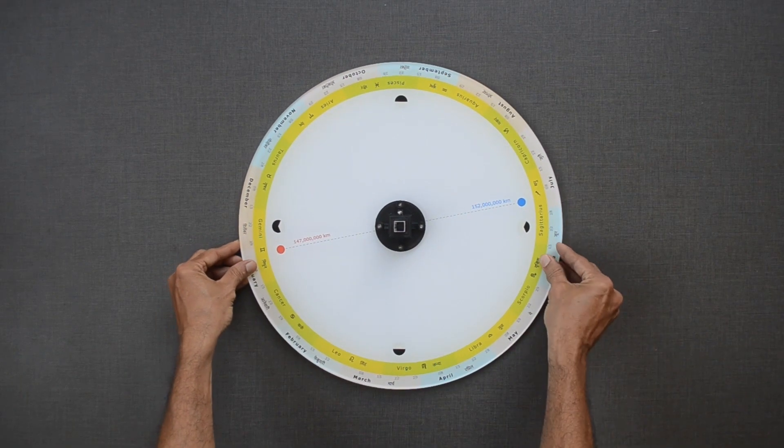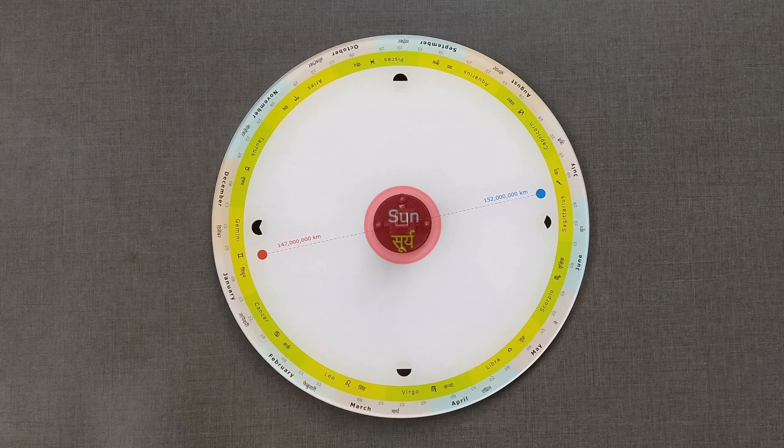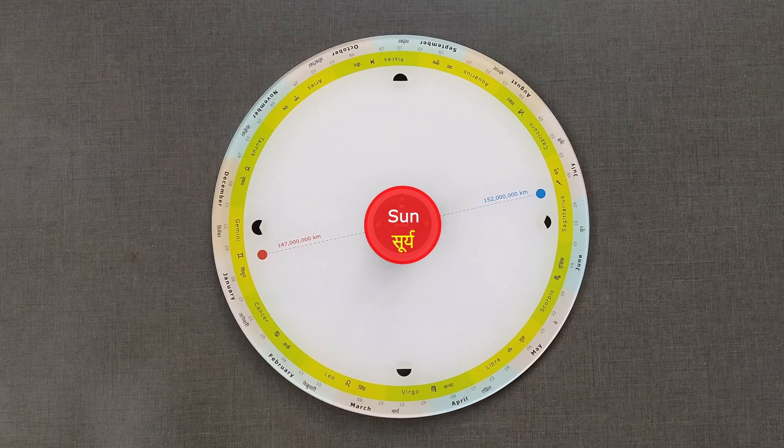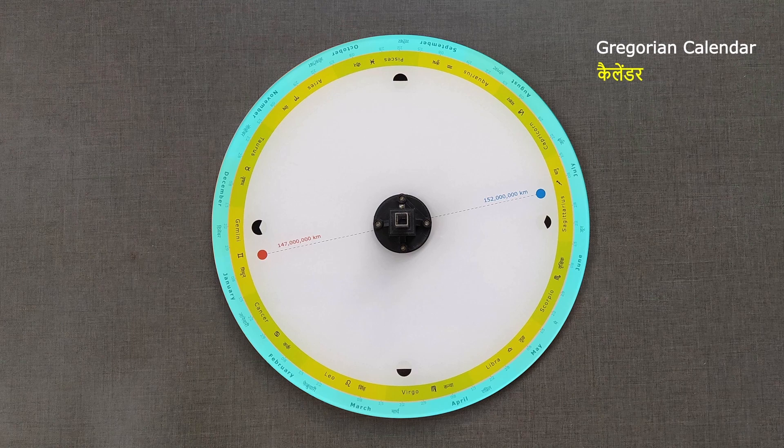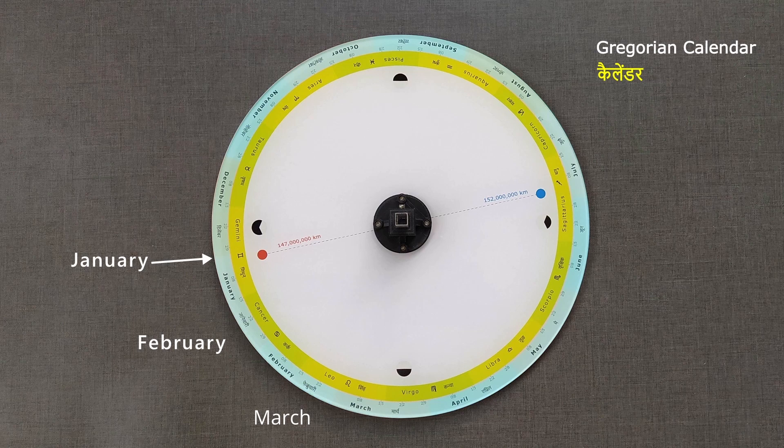Let us begin with the dial. We will place the Sun here in the center with the Earth revolving around it in the outermost circle. Months of the Gregorian calendar are marked on the outermost circle. At this location, the month of January begins, followed by February, March, April and so on.